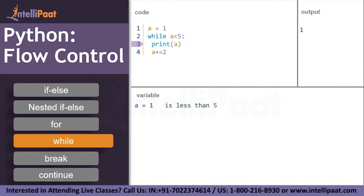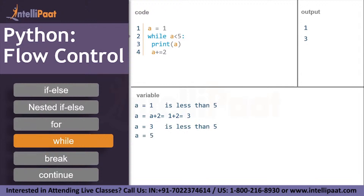We get the output as one. After getting the output, increase the value of a by two: a += 2, that is one plus two equals three. Now go back to the loop — is three less than five? Condition is true, so print a, which is three, giving output three. Again increment a by two, giving five. Check the condition: is five less than five? No, the condition is false. So the final output is one and three.